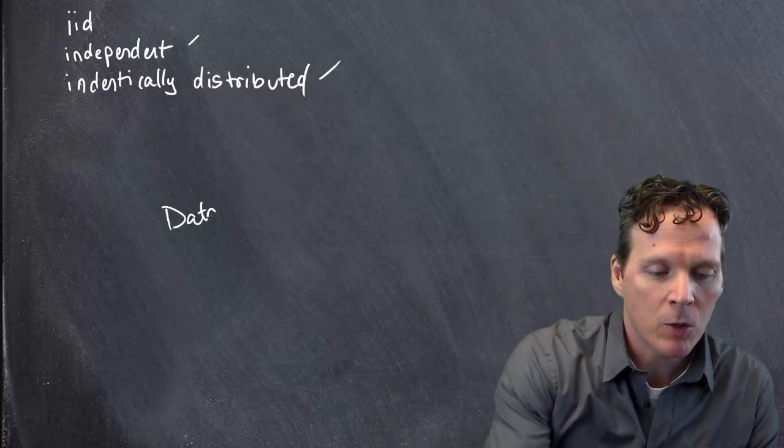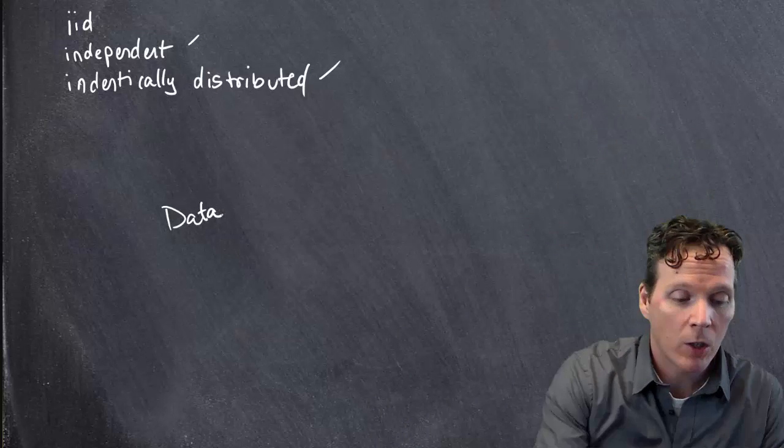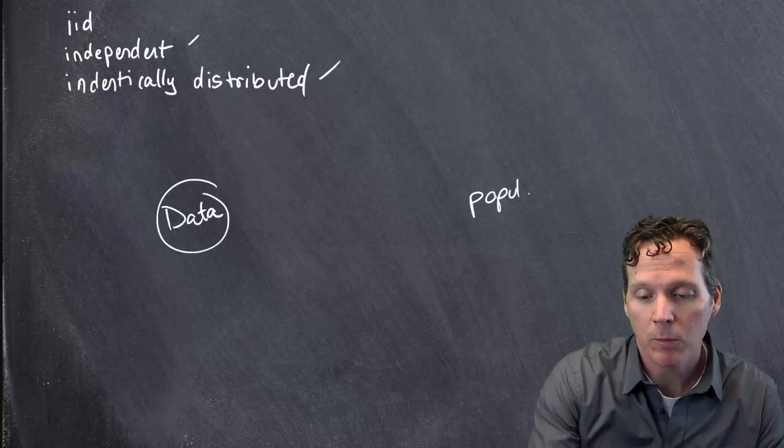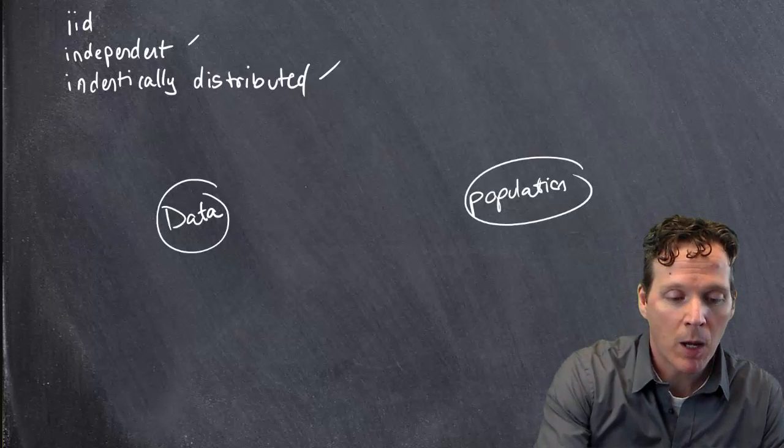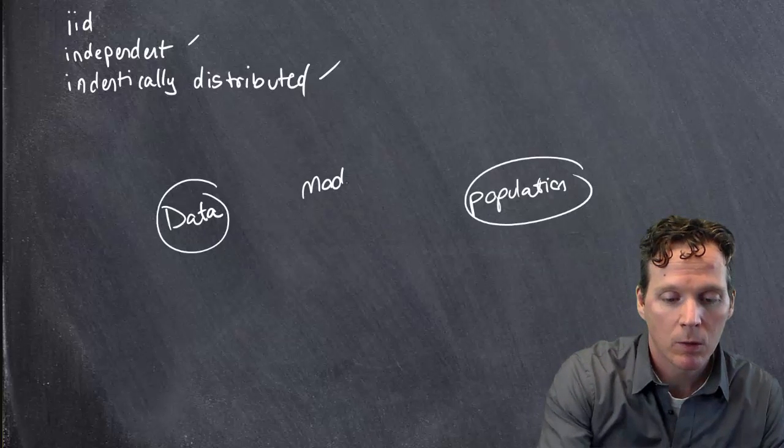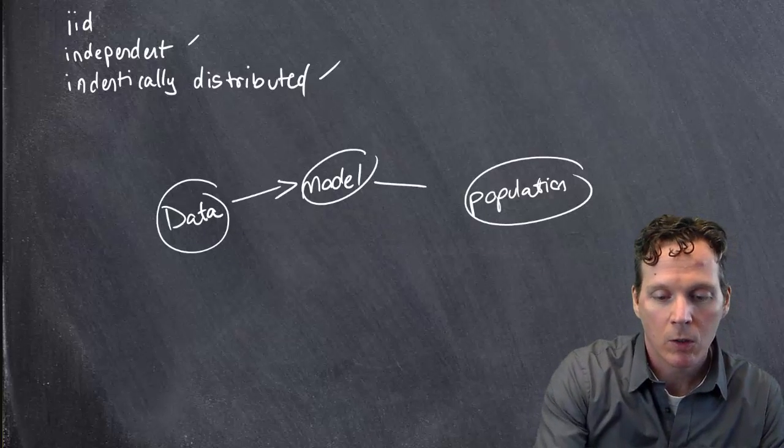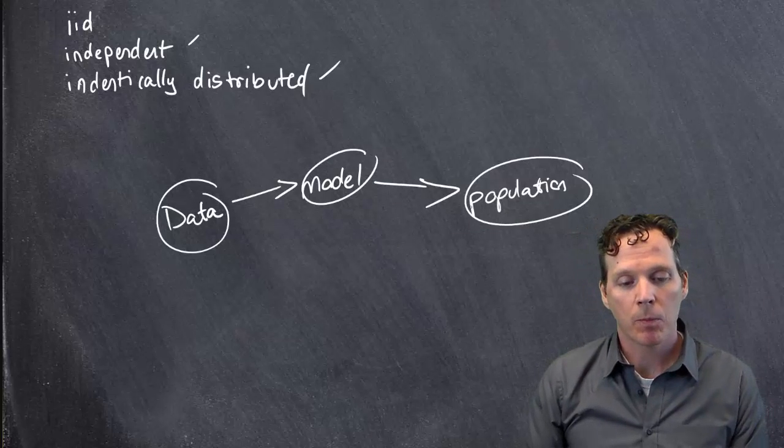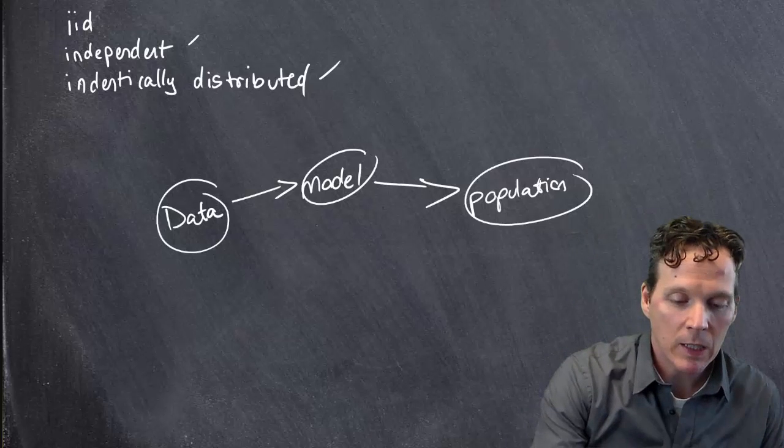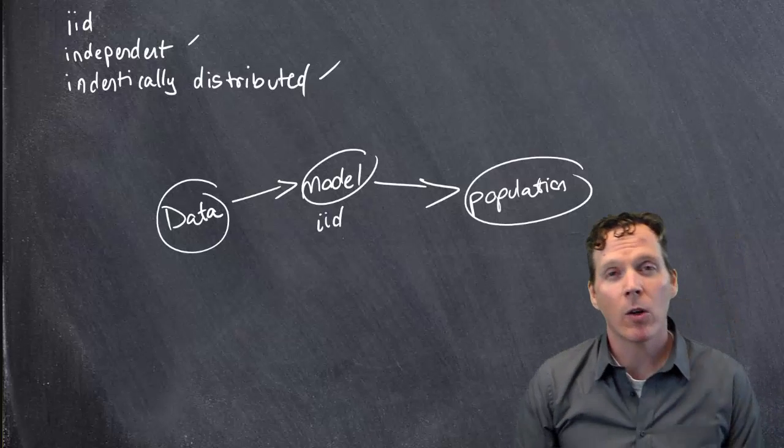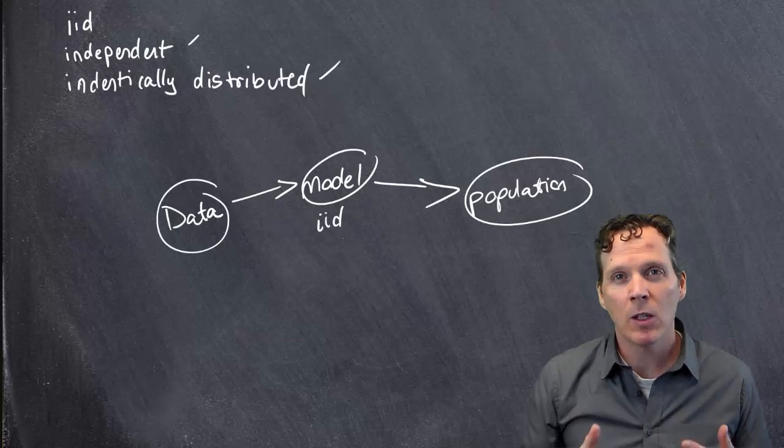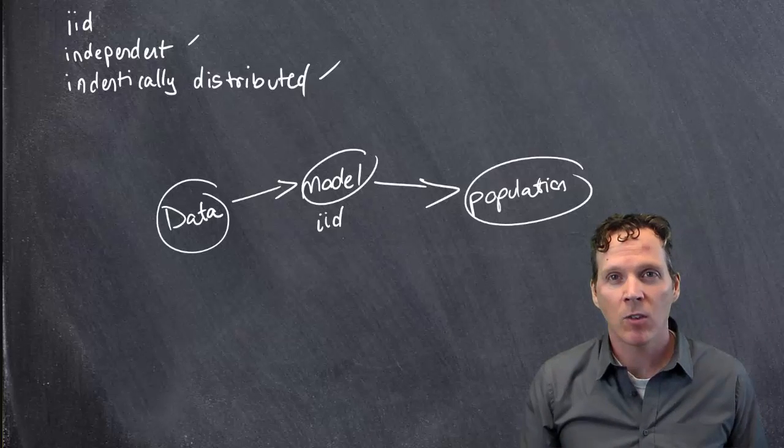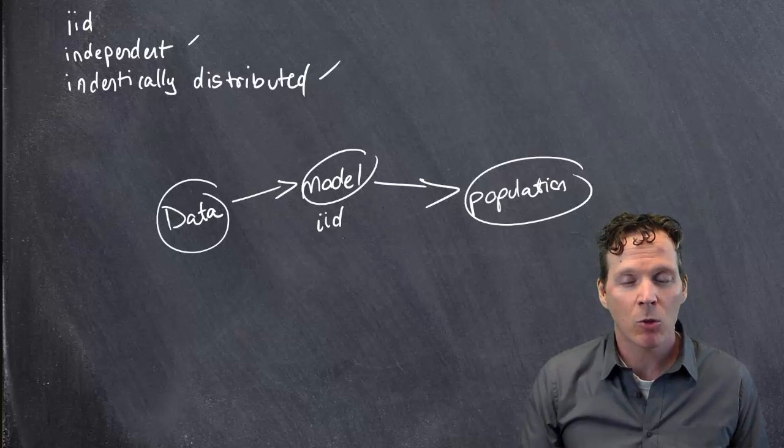To do this, I want to talk a little bit about statistical models. So here we have our data, and here we have a population. And the model is what helps us draw connections between the data and the population. IID is part of a statistical model.